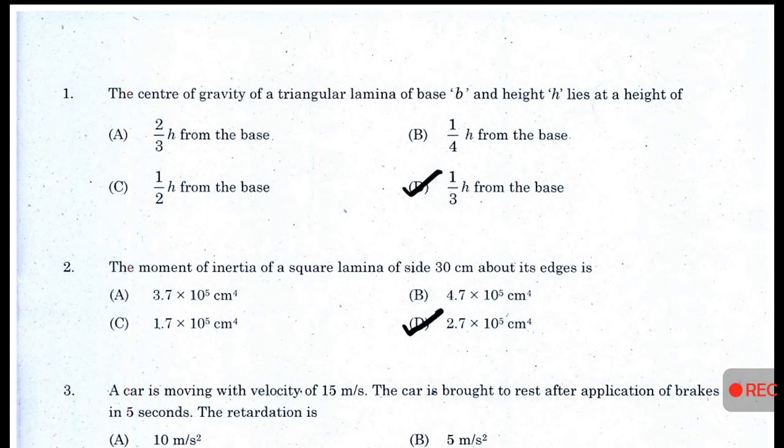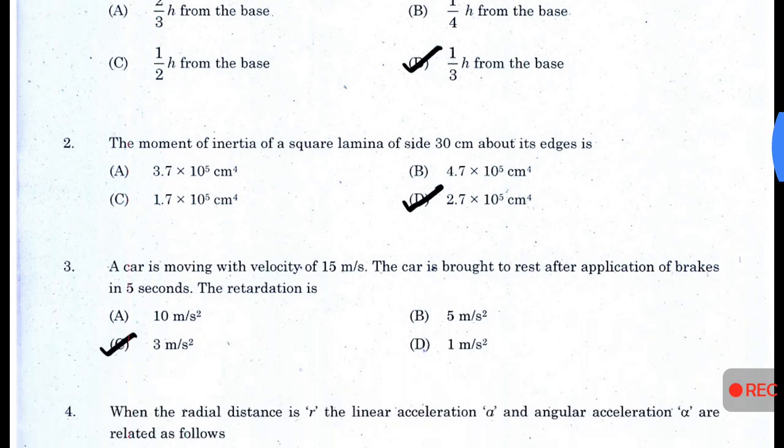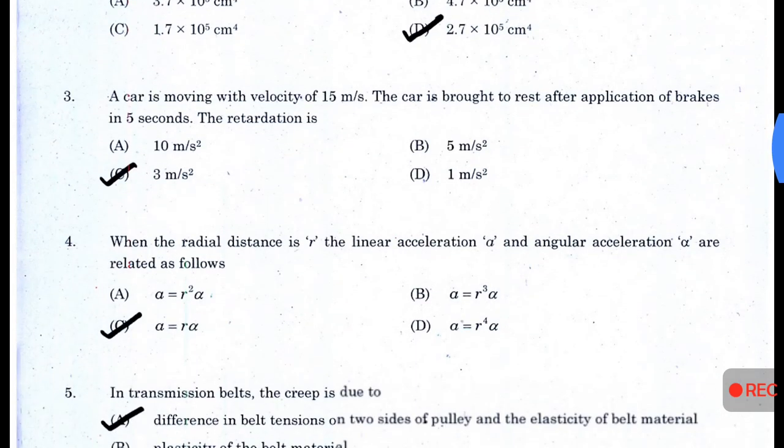The moment of inertia of a square lamina of side 30 cm about its edges is 2.7 × 10⁵ cm⁴. A car is moving with a velocity of 15 m/s. The car is brought to rest after application of brakes in 5 seconds. The retardation is 3 m/s².